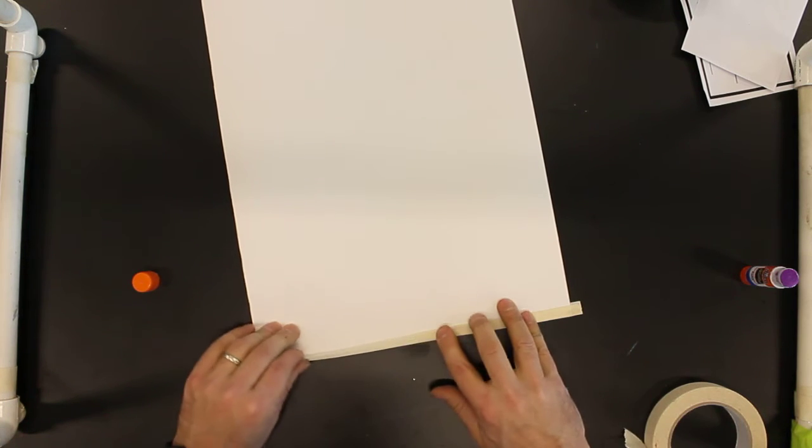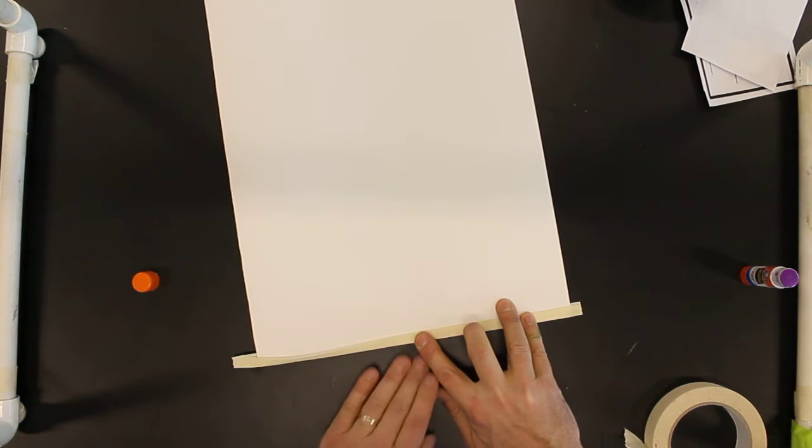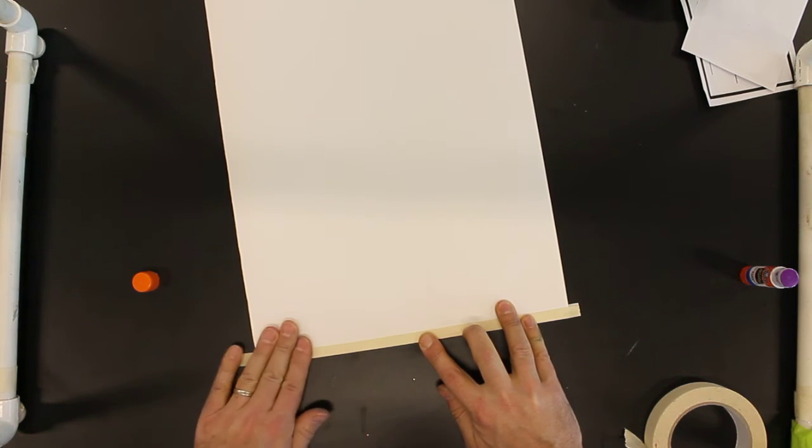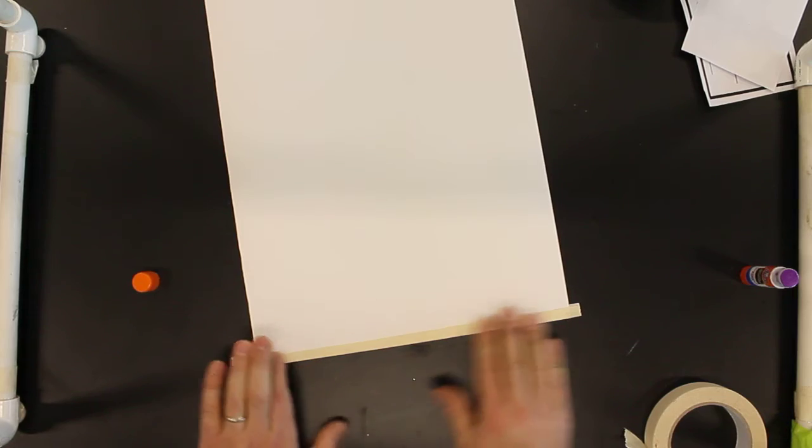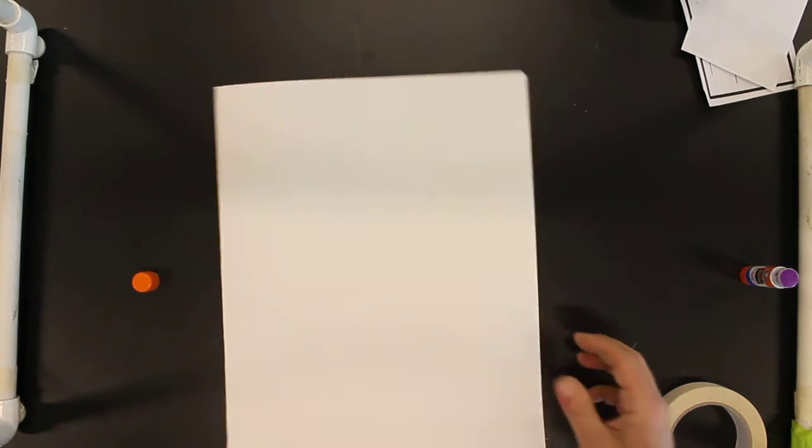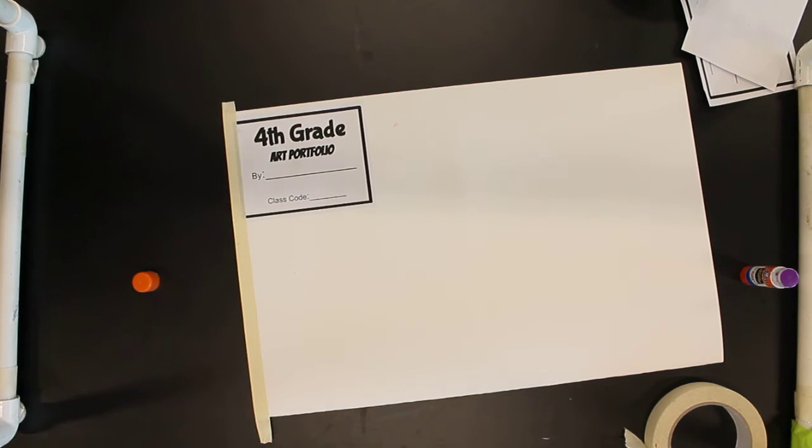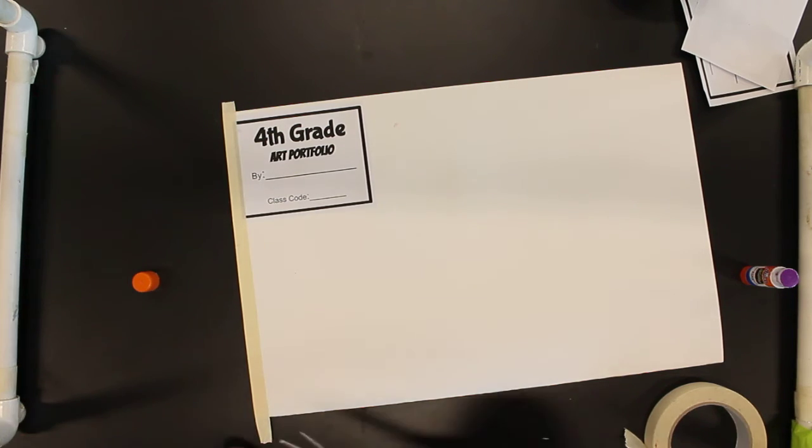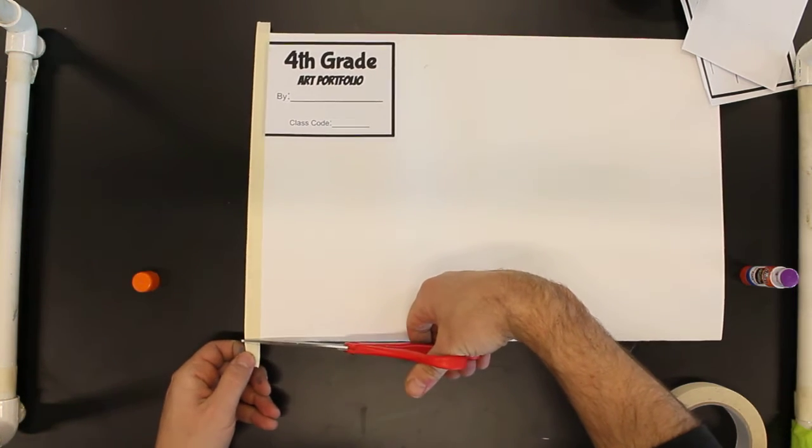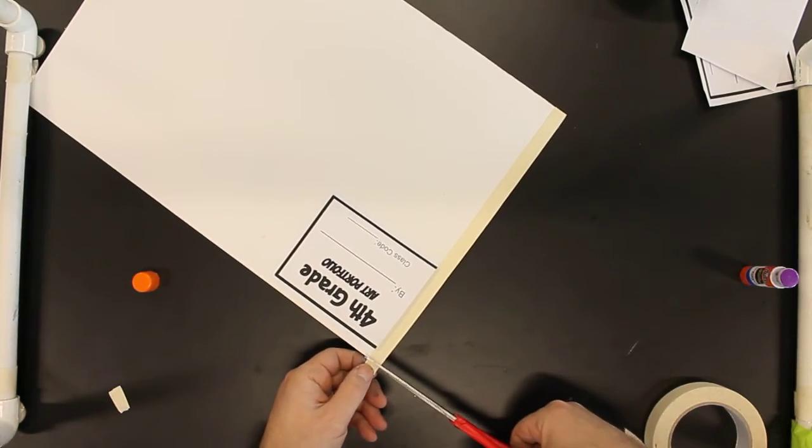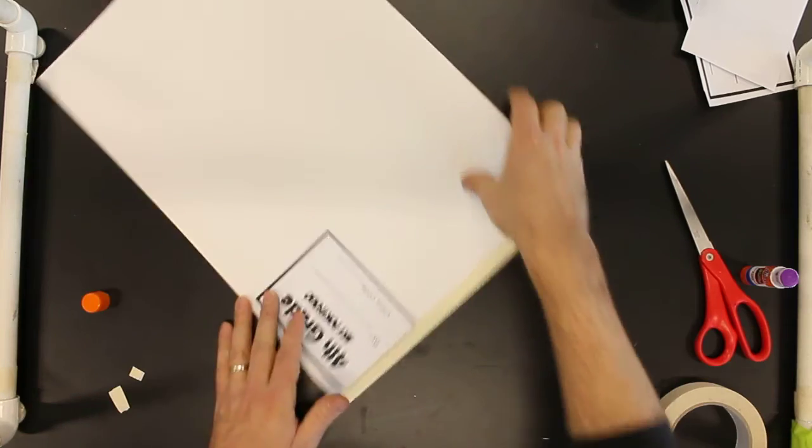Now what you need to do next is take scissors and you're going to cut off the edges here. We're going to do a little cut right here just to kind of straighten it up like that. Now there's going to be some artwork handed out to you today probably.